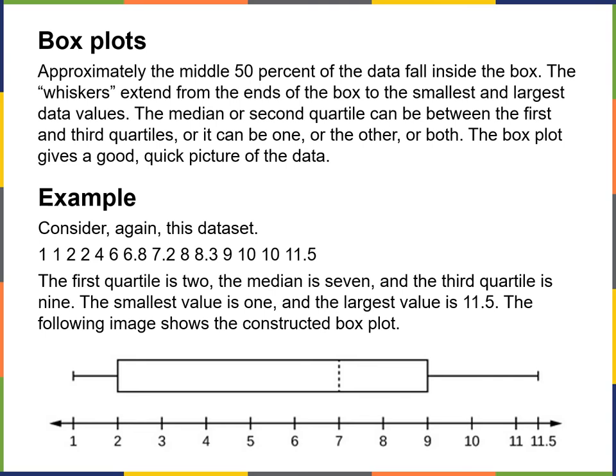The median or second quartile can be between the first and third quartiles — it just gives you a quick picture of where most of the data is. Here's the data set: the first quartile is 2, the median is 7, and the third quartile is 9. The smallest value is 1 and the largest value is 11.5, and the image shows the constructed box plot where the median is 7 and most of the data is in the first and second quartile.